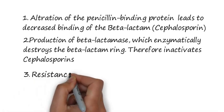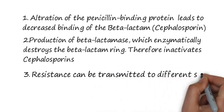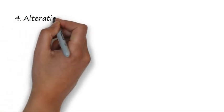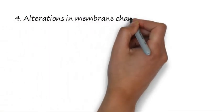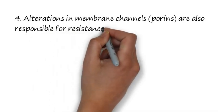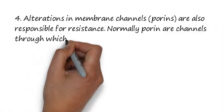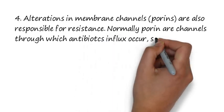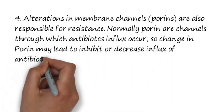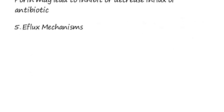Resistance can be transmitted to different species or organisms via plasmids, meaning it can be transferable. There is also alteration in the membrane channels called porins. The normal function of these membrane channels is to allow influx of antibiotics. A change in these porins may lead to decreased influx of antibiotics, particularly cephalosporins. There is also an efflux mechanism.